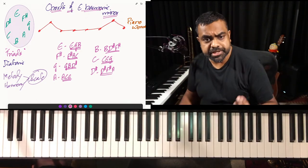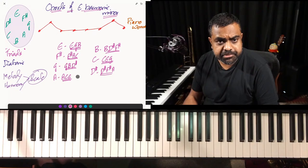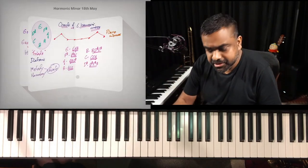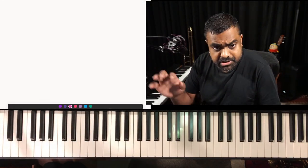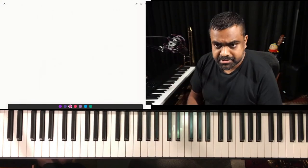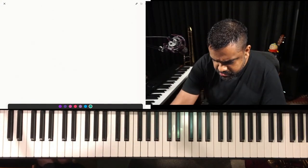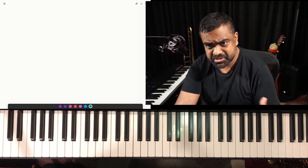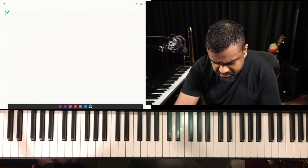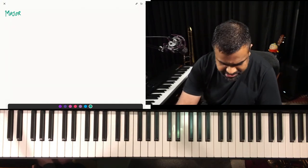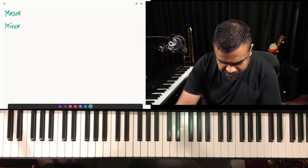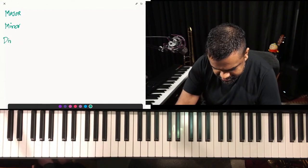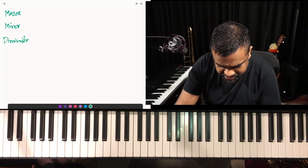Those are all the chords of the harmonic minor scale. Now we need to name them and use them. The way it's bracketed — let me first revise all the basic triads used in a lot of songs. You have the major chord, the minor triad, the diminished triad, and the augmented triad. These are four very important chords.